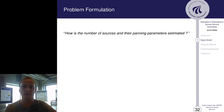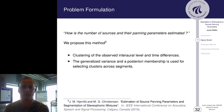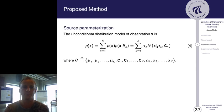So how is the number of sources and the panning parameters estimated? We proposed the method at ICASSP 2018 in Canada, which is a method based on clustering of the observed interaural level and time differences. We used the generalized variance and the posterior membership for selecting clusters across all segments. We parameterized the observations as an unconditional distribution model, shown in equation 4, a probabilistic model of finite mixtures, namely a Gaussian mixture model.